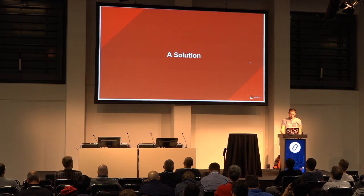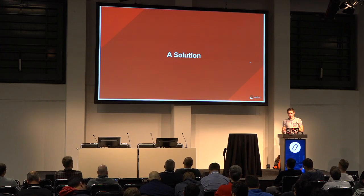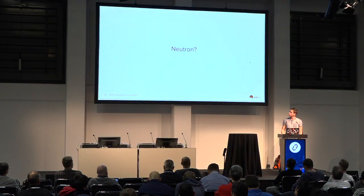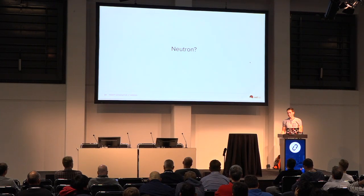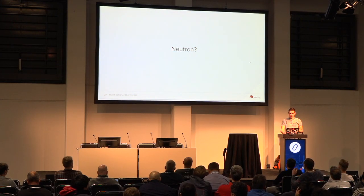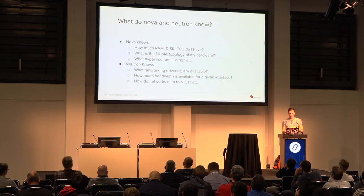So how we attacked this problem and came up with a solution. The solution we landed on wasn't what we arrived at on day one — this was built up iteratively by looking at various different choices. Starting off: we're talking about vSwitches, Nova doesn't need to know about networking. The simple answer would have been to let Neutron do all of this for us. The issue with this is that you need to think about what Nova is aware of and what Neutron is aware of.